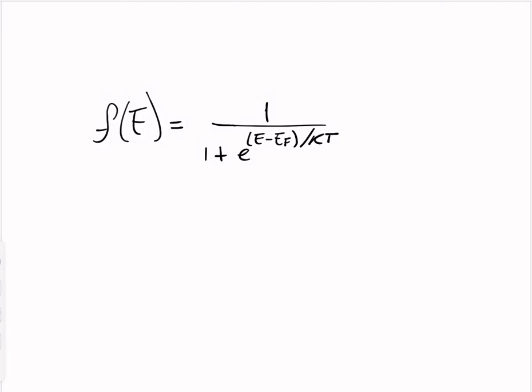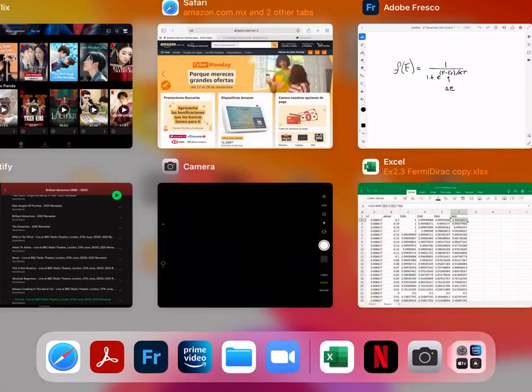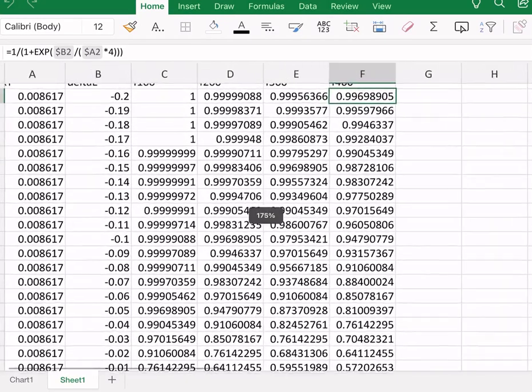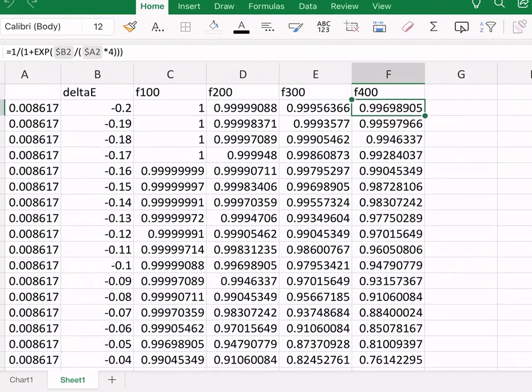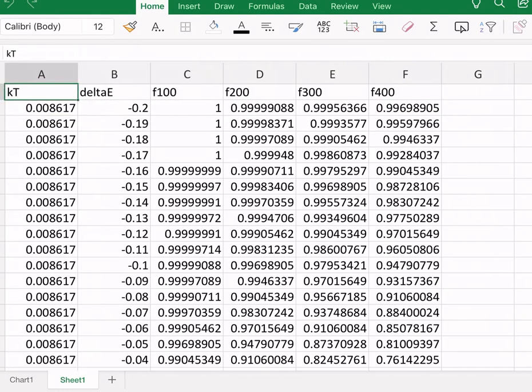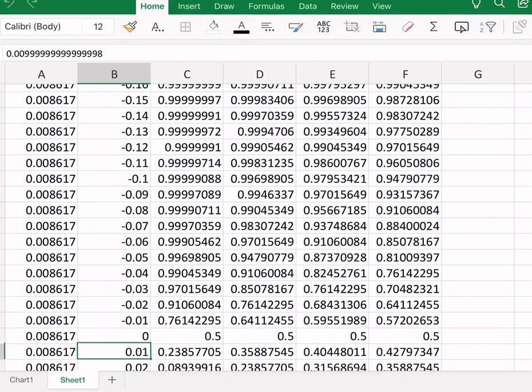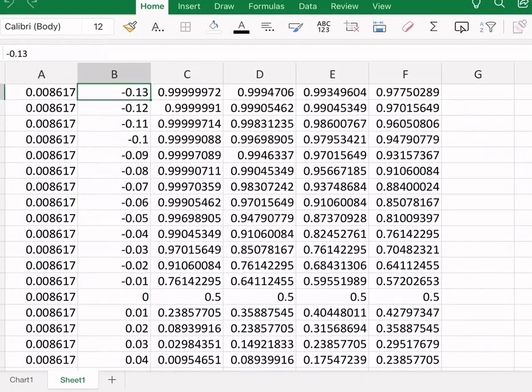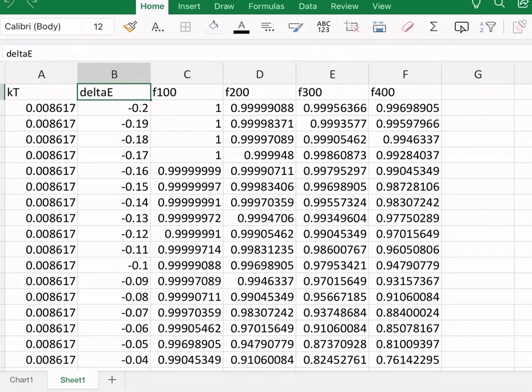So, knowing this, I'm going to call this delta E. And what we have here is, as you can clearly see, we have KT, which is a constant. We have delta energy, so E minus EF. We're going to go from minus 0.2 up to 0.2. And we are going to change the temperature in Kelvin from 100 to 400.